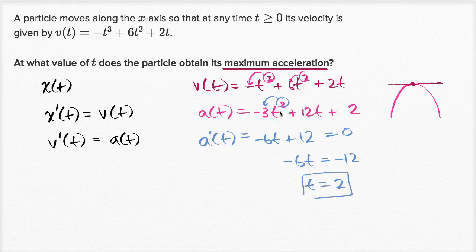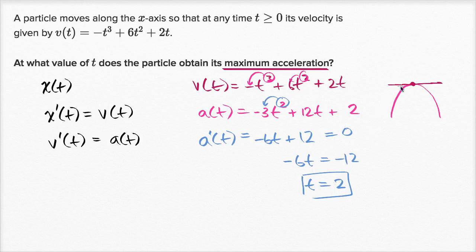At this point, you could say: I know this is a downward opening parabola because I have a negative coefficient on the second degree term. I know the slope of the tangent line is zero at t = 2, so that's going to be my maximum point. Or you could go a little further and take the second derivative.